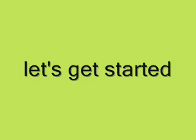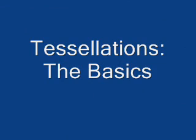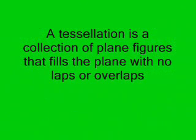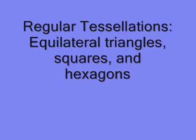The basics of tessellations and MC Escher will be on the test. Let's get started. Tessellations — the basics. A tessellation is a collection of plane figures that fills the plane with no gaps or overlaps. Regular tessellations include equilateral triangles, squares, and hexagons.